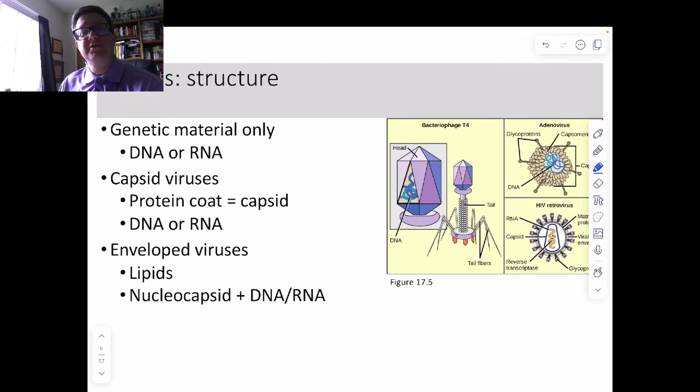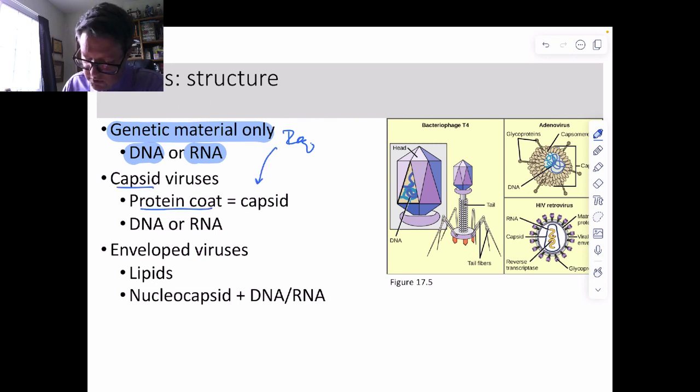When we look at viruses, they have one requirement and then we can kind of build up from there. They must have genetic material, that genetic material will be either DNA or RNA. So this is required. If they have more than that, the next phase would be they have a capsid, which is a protein coat. Again, they could be DNA or RNA based.